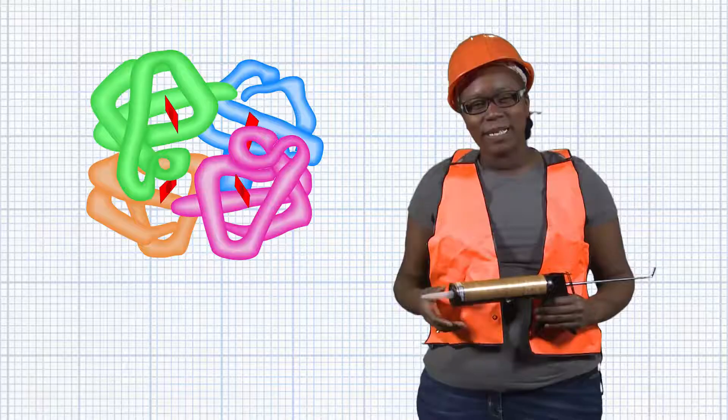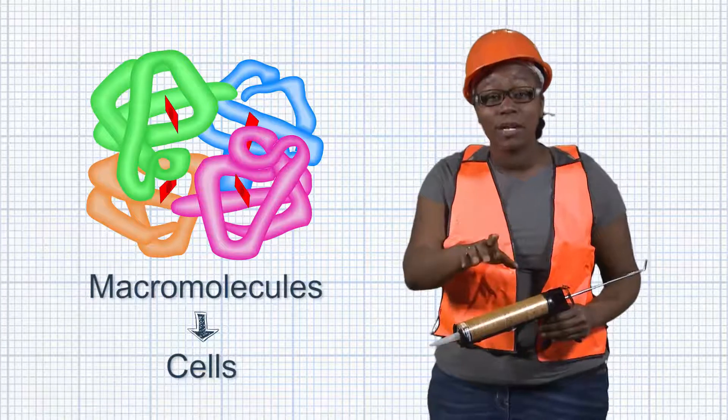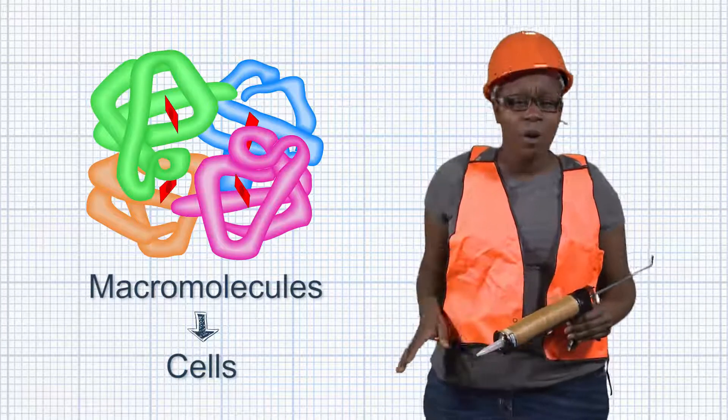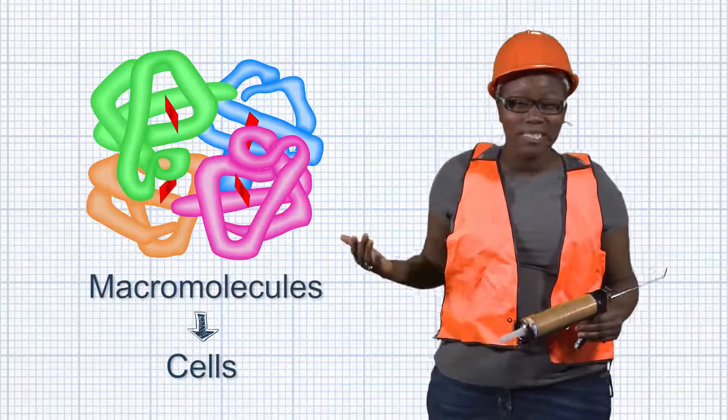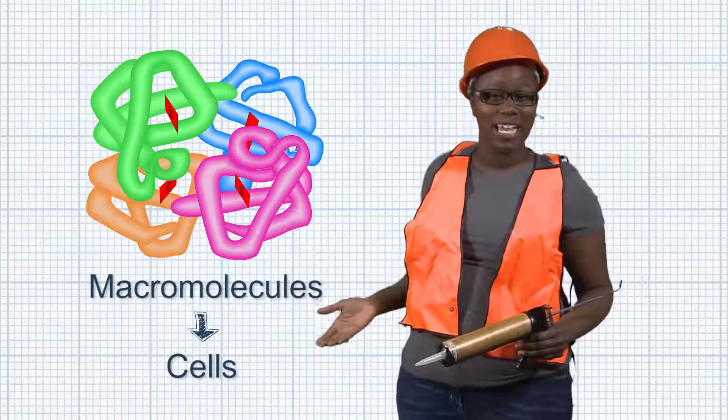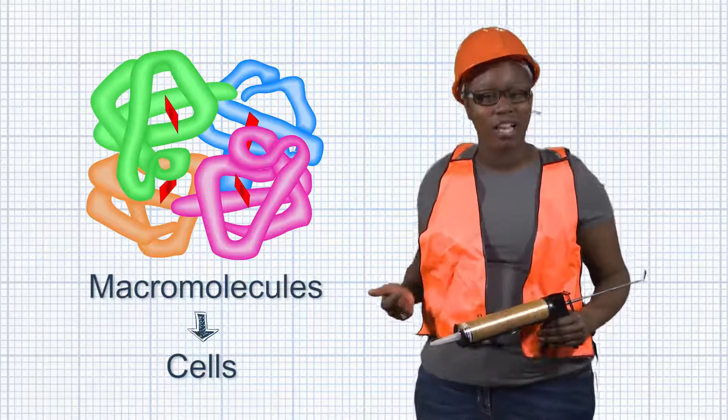Now it's time to make some cells. Making a good cell takes a lot of practice, so start with something small, like a bacterium if you're a novice. Me, since I made this hemoglobin protein last night, I'm gonna do your standard red blood cell.